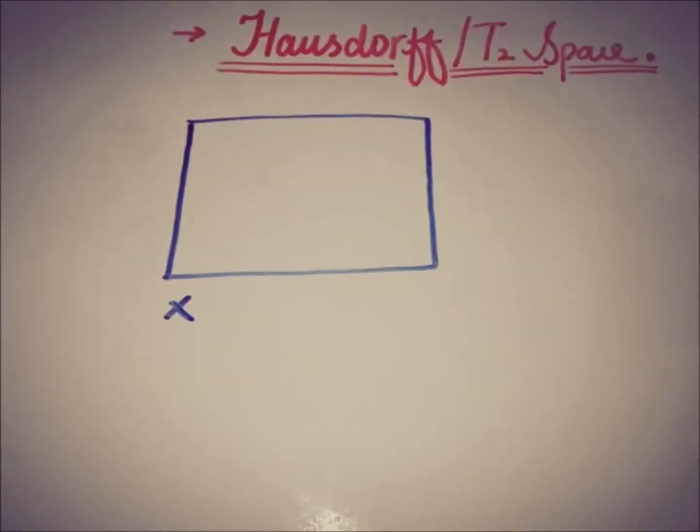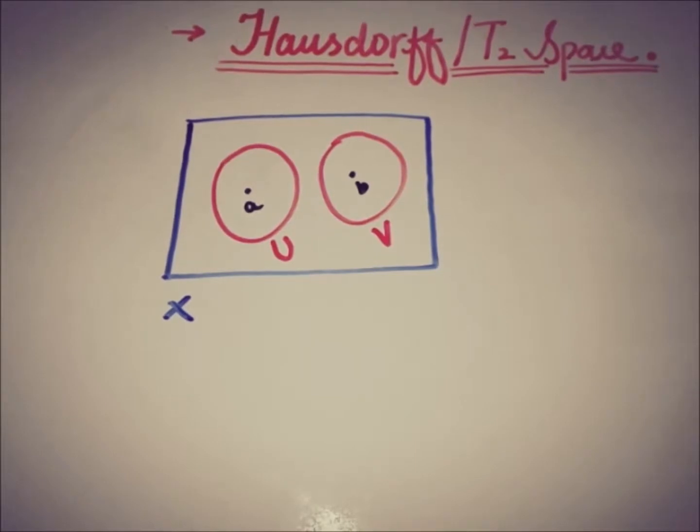If we have a topological space X, then this space is said to be a Hausdorff space or T2 space if any two points in this space can be separated by open sets, which we call U and V.